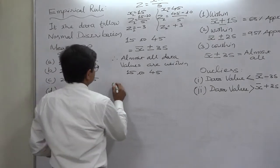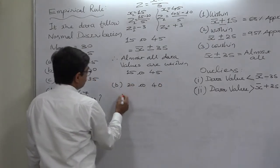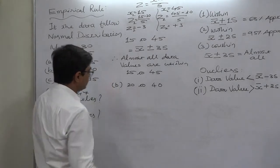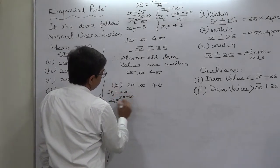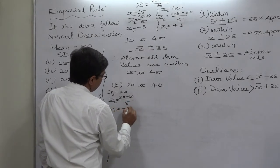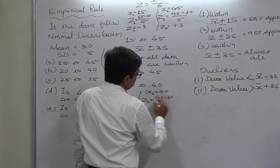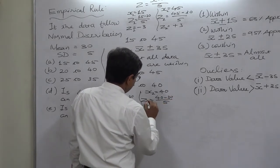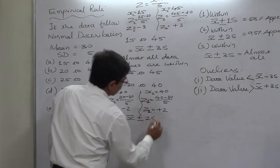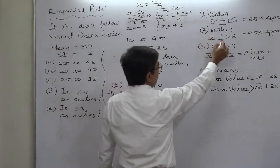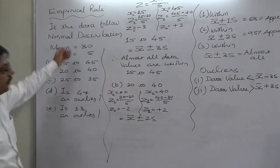For the second range, 20 to 40: for X = 20, Z = (20 − 30) / 5 = −2. For X = 40, Z = (40 − 30) / 5 = +2. This means the range corresponds to x̄ ± 2 standard deviations. Within x̄ ± 2 standard deviations, there are approximately 95% of data values for a normal distribution.